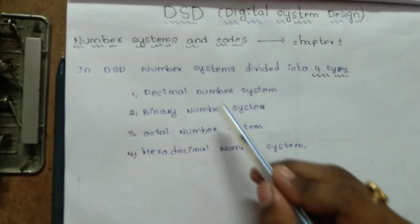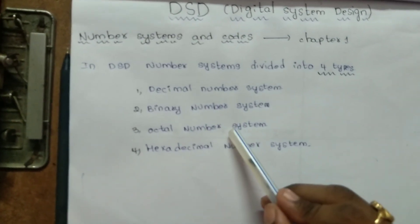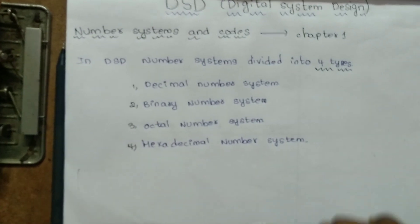That is, Decimal Number System, Binary Number System, Octal Number System, and the fourth one is Hexadecimal Number System.